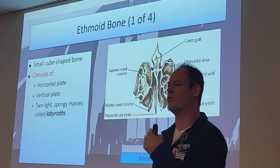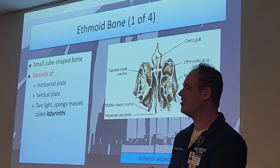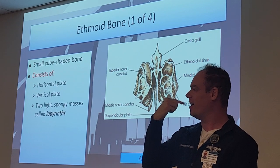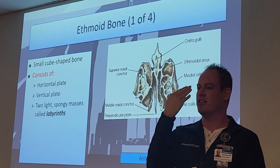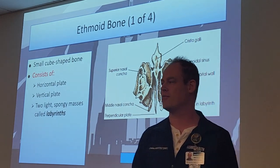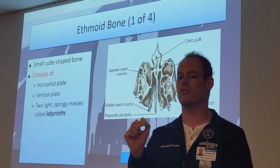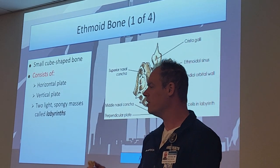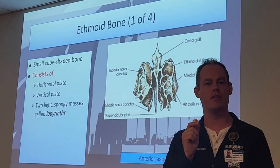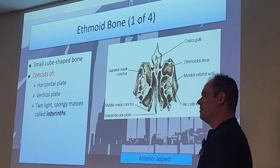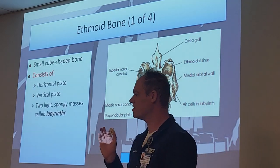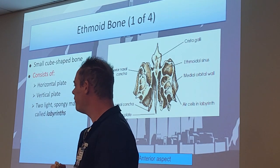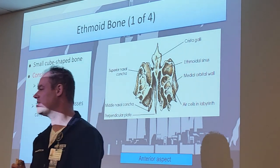The perpendicular plate is important because it's part of your bony nasal septum. When you look on an x-ray and you see that long plate in the nose, the top portion is the perpendicular plate of the ethmoid bone. Write this down: the ethmoid bone - specifically the perpendicular plate - forms the upper half of the bony nasal septum.